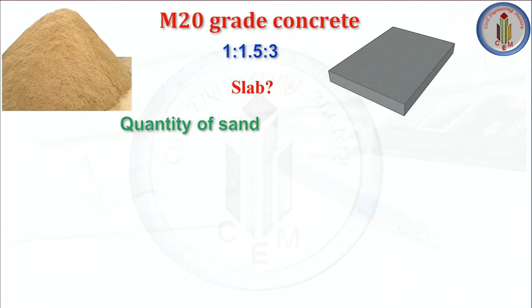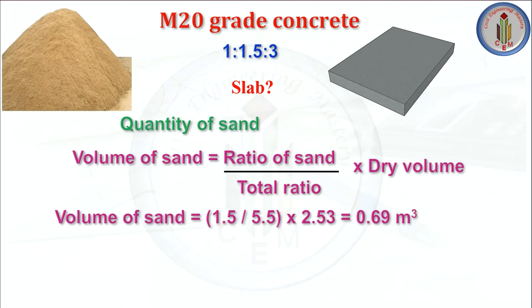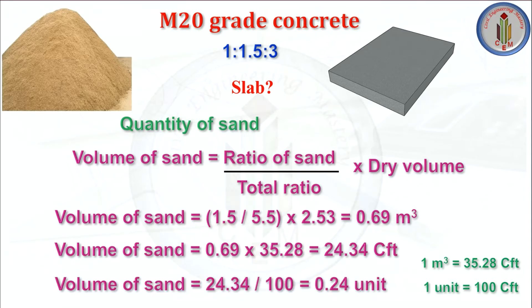Next, we calculate the quantity of sand. Volume of sand equals ratio of sand divided by total ratio, multiplied by dry volume — 1.5 divided by 5.5 multiplied by 2.53 — we get 0.69 meter cube. Converting to cubic feet gives 24.34 CFT. We buy sand in units, and 1 unit equals 100 cubic feet. So volume of sand equals 24.34 divided by 100, giving 0.24 unit.